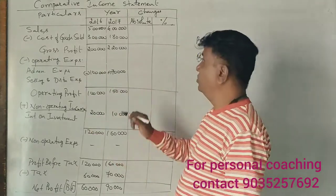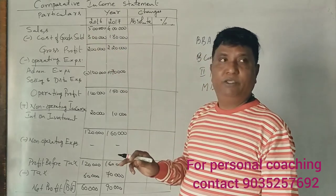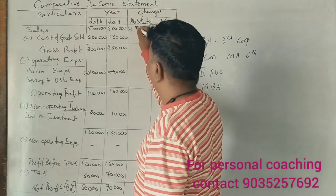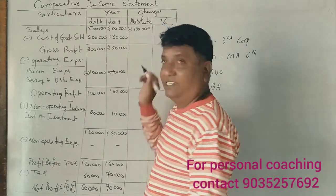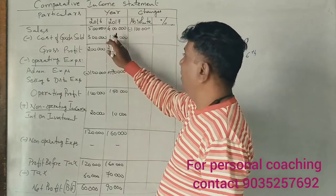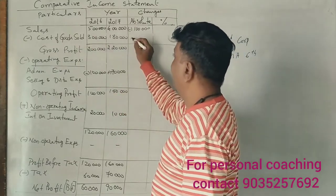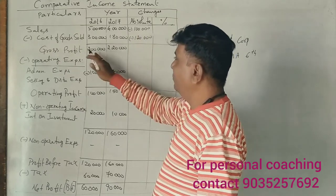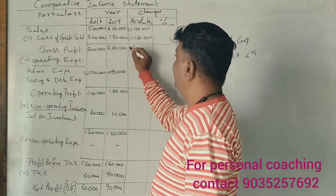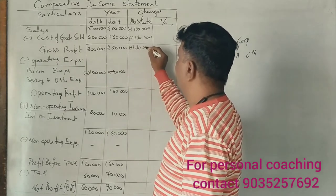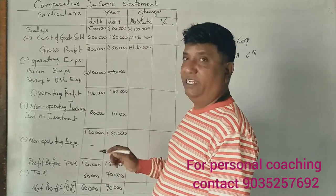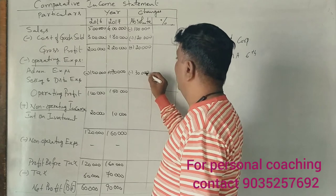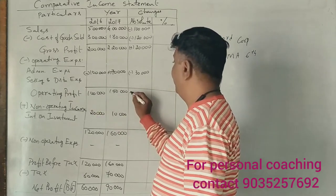The absolute change is Year 2 minus Year 1. For sales: 4,00,000 minus 5,00,000 equals minus 1,00,000. Cost of goods sold: 1,80,000 minus 3,00,000 equals minus 1,20,000. Gross profit: 2,20,000 minus 2,00,000 equals plus 20,000. Operating expenses: 70,000 minus 1,00,000 equals minus 30,000. Operating profit: 1,50,000 minus 1,00,000 equals plus 50,000.